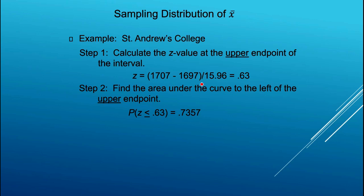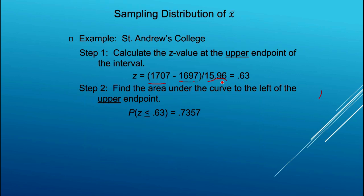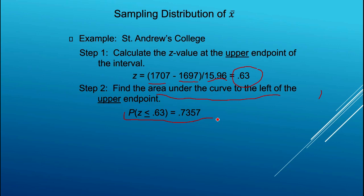To calculate the probability of being within plus or minus 10 points of the actual population mean, I use z-scores. I take the upper limit, 1707, subtract 1697, giving the 10-point spread, then divide by 15.96 — the standard error of the estimate calculated from the previous graph. This tells me that 1707 is 0.63 standard deviations from the mean. I need to find the area under the curve to the left of this upper endpoint: the probability that z ≤ 0.63, which from the table is 0.7357.